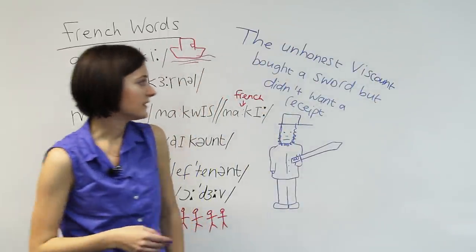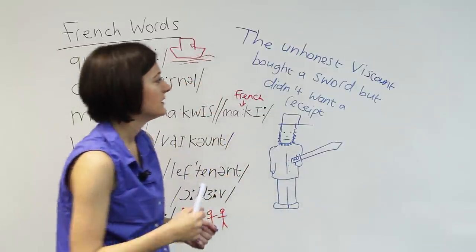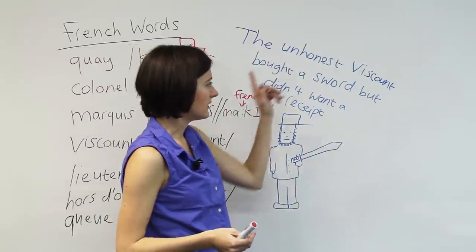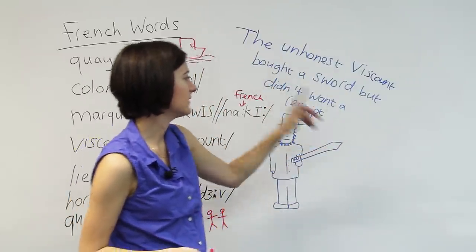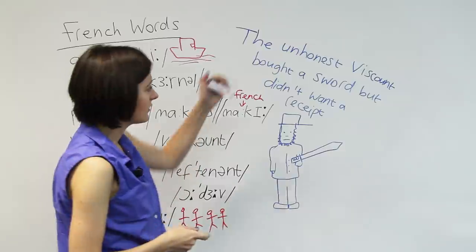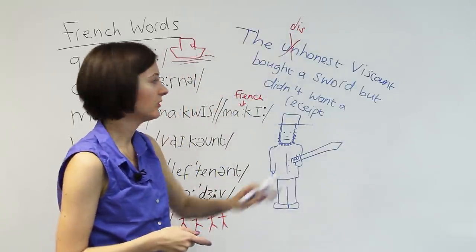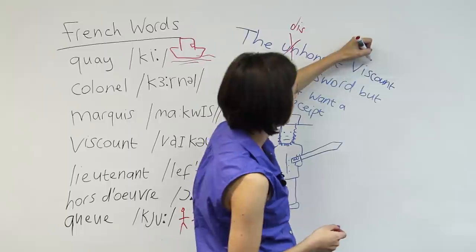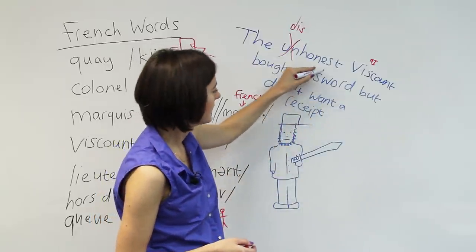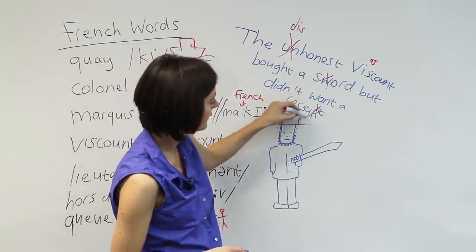Let's take a look at this sentence I've got here. There are some pronunciation errors in here. Let's correct it. So I'll say it in a wrong way, and then we'll go through and we'll make some changes. The unhonest viscount bought a sword, but didn't want a receipt. So how can we change that? Do you remember the word that's not a word? It's not a word, but we can say dishonest. What was wrong with viscount? We actually use a different vowel there. It's I. What's wrong with this word? Sword. Silent letter. What's wrong with this word? Receipt. Another silent letter. There you go.